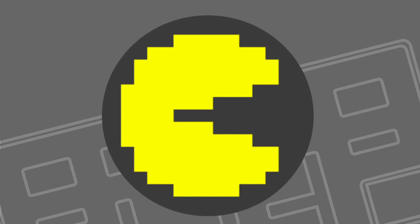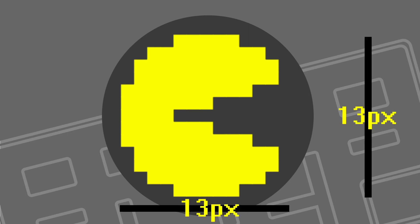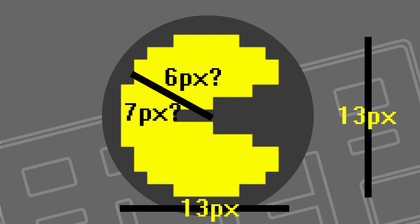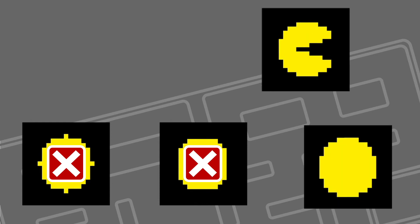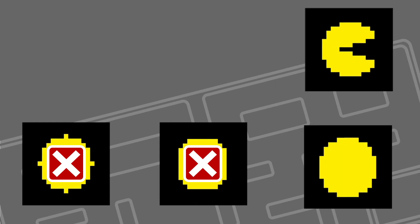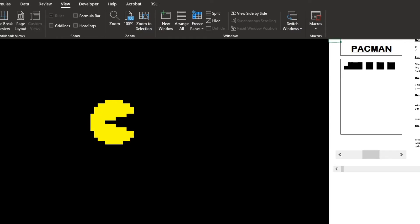Pac-Man is 13 pixels high and 13 pixels wide — looks like a circle with a radius of 6 or 7, and we can't do half pixels. This is the Excel formula for a filled circle with a radius of 7. Doesn't look much like Pac-Man. Try again with a radius of 6 — better, but it's still not Pac-Man. And here he is: he has the same height and width but a different curvature. So technically, Pac-Man is not a circle.